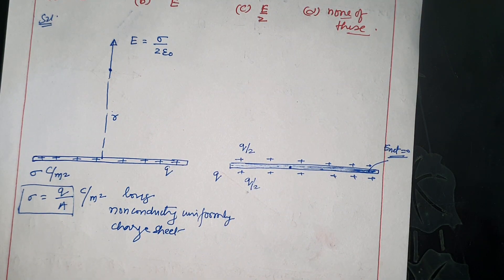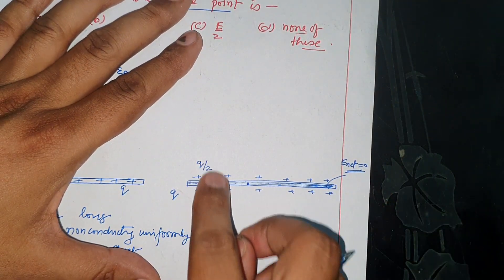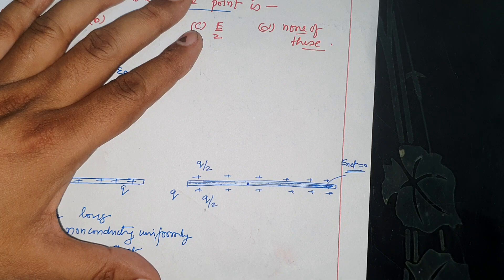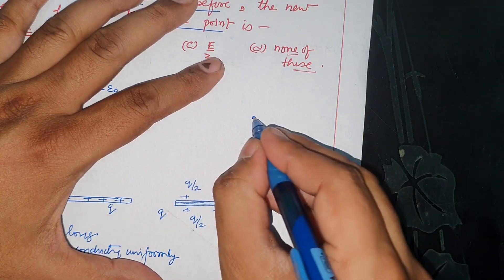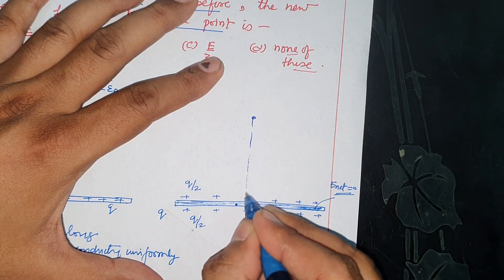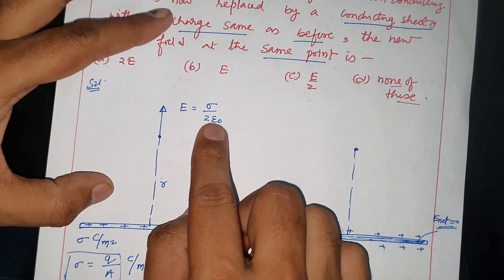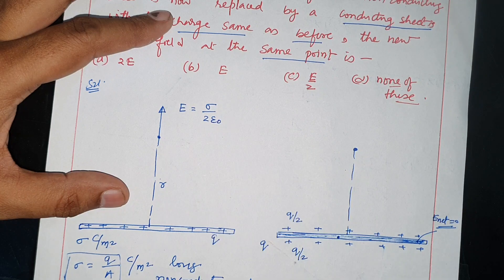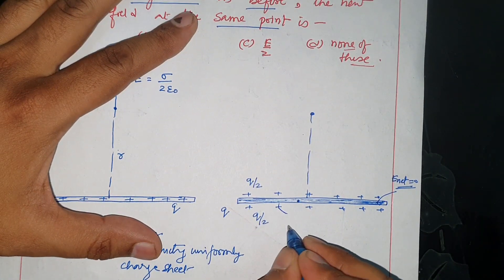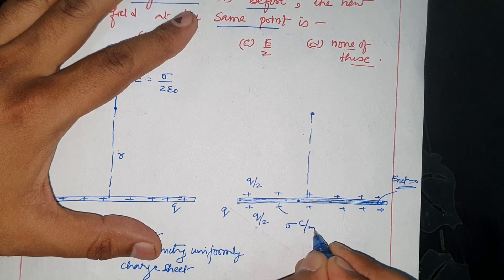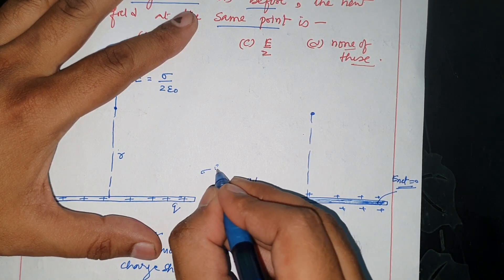So the charge splits into two layers. Due to both charges, the net electric field inside the conductor is zero. Now consider the electric field at the point above the sheet due to the conducting sheet. The single layer had E = σ/2ε₀; now there are two layers, each with surface charge density σ coulombs per square meter.